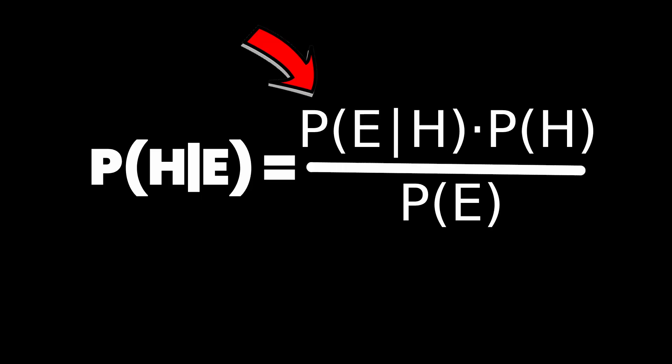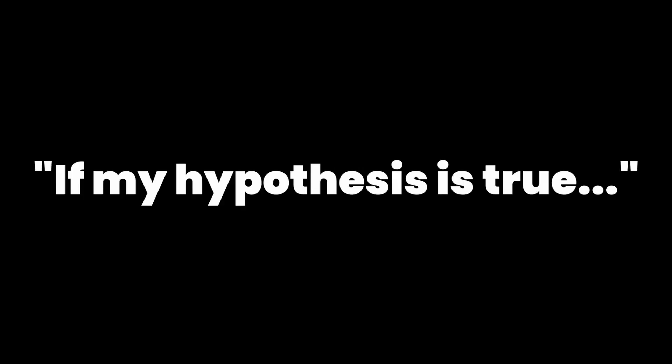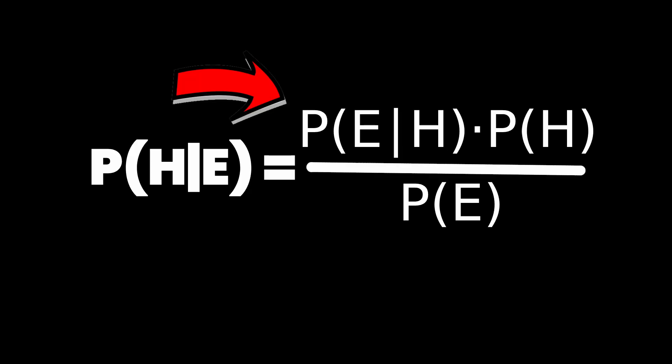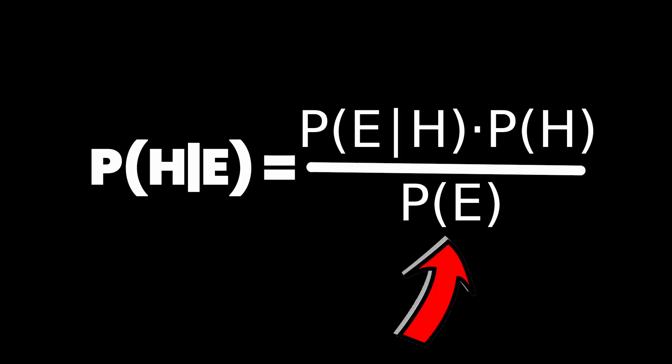Next, you need your P(E|H), the likelihood. It asks: if my hypothesis is true, what's the chance I would see this evidence? For example, if they are a software engineer, the chance their laptop is covered in coding stickers might be 40%. Now you just multiply those two numbers together.